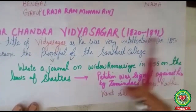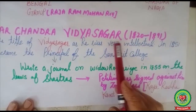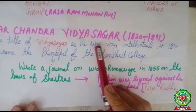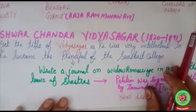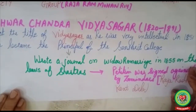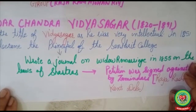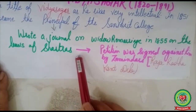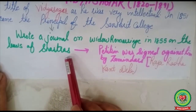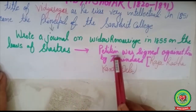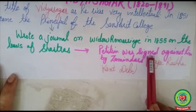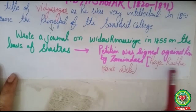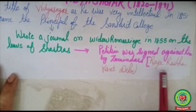Then Ishwar Chandra Vidyasagar came into active politics and did a great deal for the passing of the Widow Remarriage Act. Born in 1820 and died in 1891, he received the title of Vidyasagar for his great intelligence. In 1851, he became the principal of Sanskrit College. In 1855, he wrote a journal on widow remarriage based on the shastras, trying to convince Indian people that the scriptures permitted widow remarriage. Against him, a petition was signed by zamindars, led by Raja Radha Kant Deb — the same person who had criticized Raja Ram Mohan Roy for his efforts against sati.